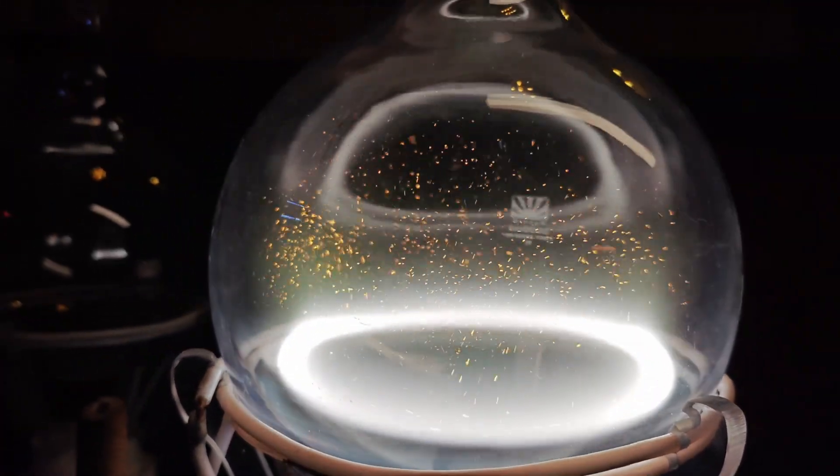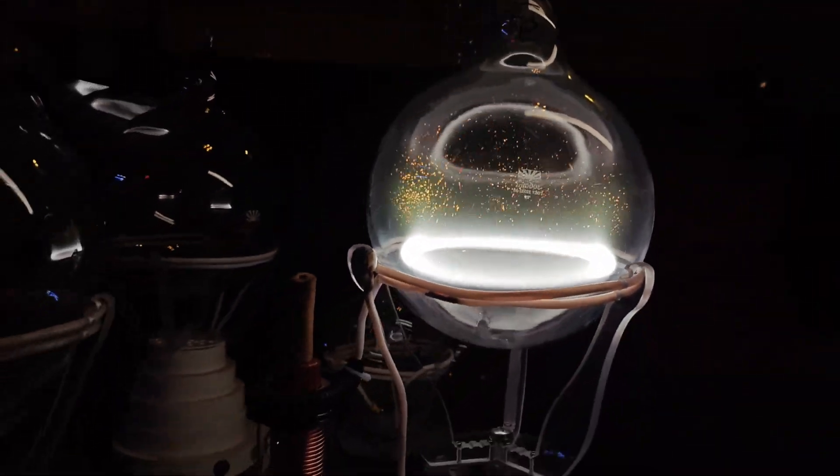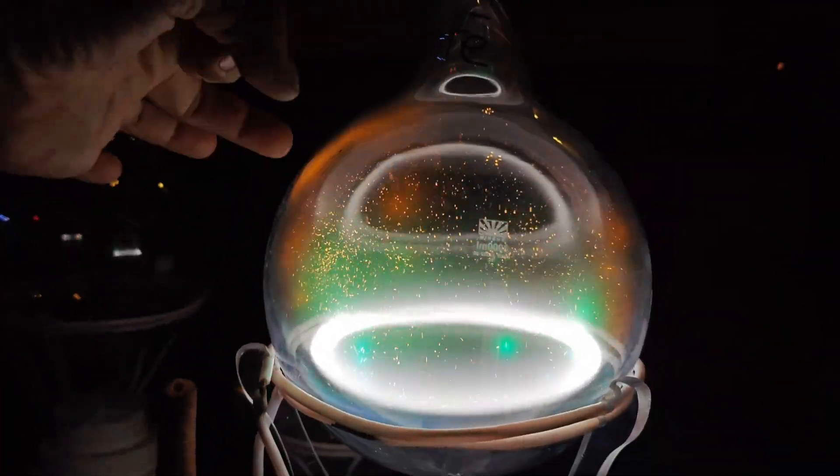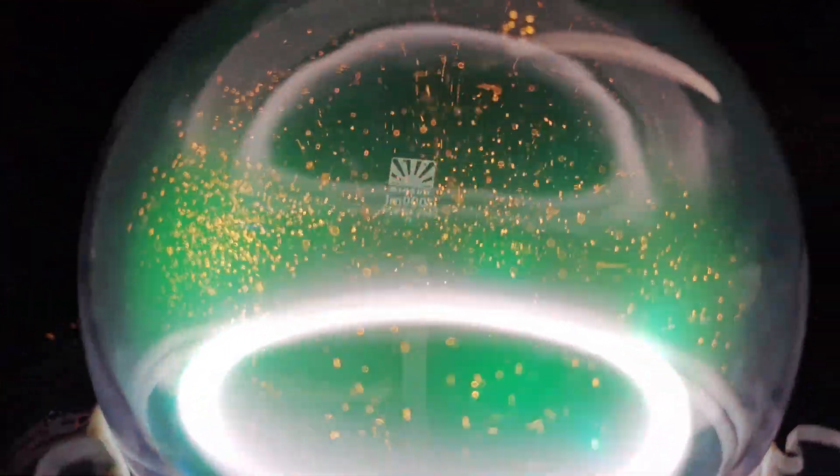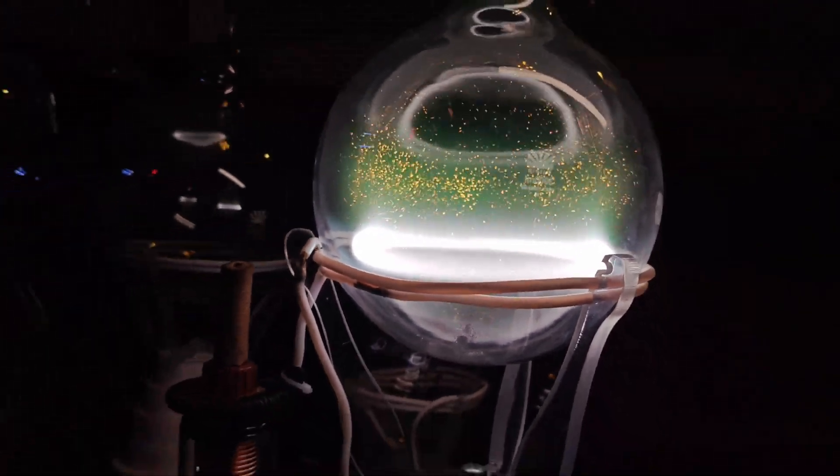Dusty plasma makes kinetic plasma physics visible at the millimeter scale. Concepts like screening, Coulomb interactions and phase transitions, each normally abstract, appear as moving geometry which you can film in real time.